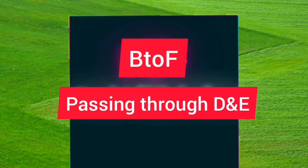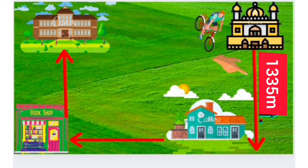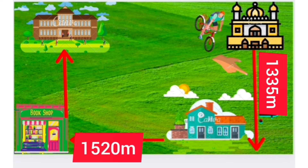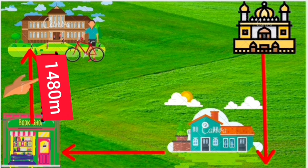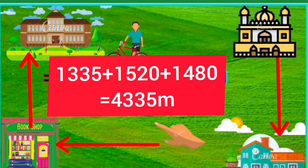Now he goes from point B to F. B is the religious place and F is the school, passing through point D — that is his house — and the distance is 1335 meters, then to a shop whose distance is 1520 meters, and finally to school, that is point F, whose distance is 1480 meters. The total distance traveled by Raju is 4335 meters.